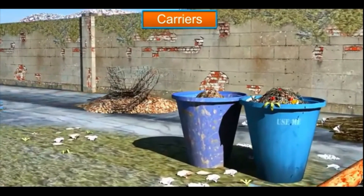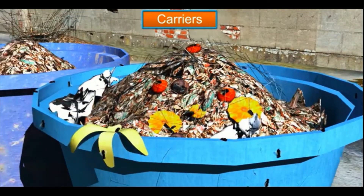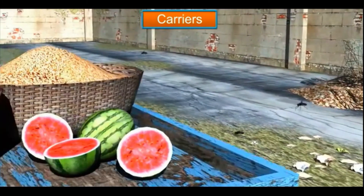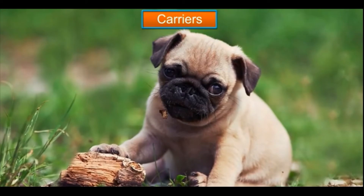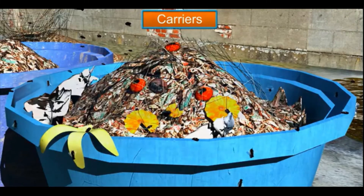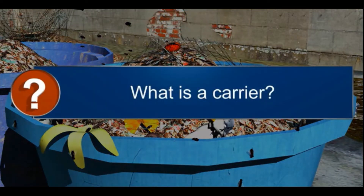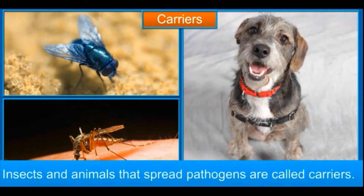There are a few more ways diseases spread. Mosquitoes and flies keep roaming from sewage water and garbage to food, carrying pathogens with them. Even animals such as dogs transmit disease to humans. These insects and animals that spread pathogens are called carriers. Each carrier has a specific way of transmitting diseases.